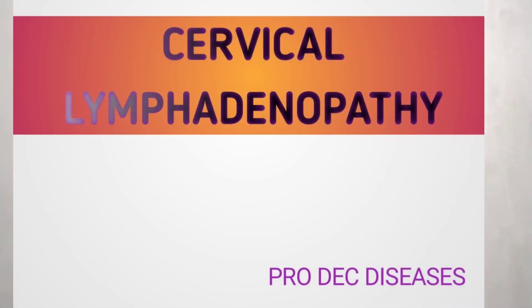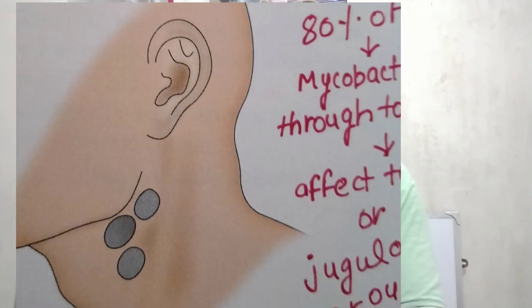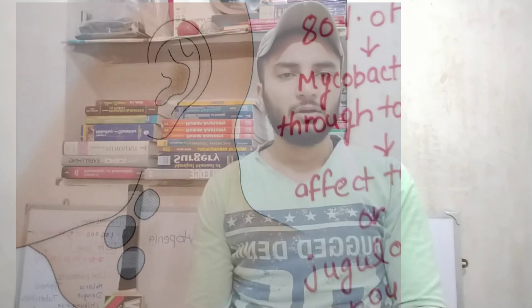Today we will be discussing cervical lymphadenopathy. It is defined as swelling within the cervical lymph nodes — that is, swelling occurring within the region of the neck. This may be localized or generalized.